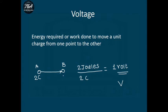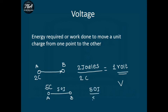The higher the energy required to move a charge from one point to another, the higher the potential difference. For example, if 5 coulombs of charge at point A requires 50 joules of energy to move to point B, then the potential difference between the two points is 50 joules ÷ 5 coulombs = 10 volts.